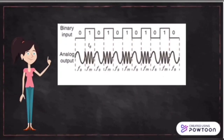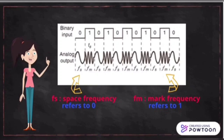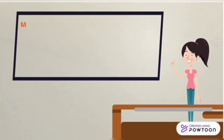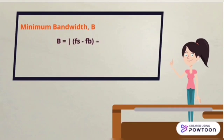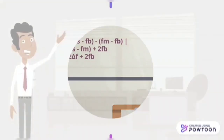In FSK, the binary input will produce analog output. Since there are two different frequencies, one is labeled as Fs and another as Fm. To find the frequency deviation, the difference between Fs and Fm is divided by two. To calculate the minimum bandwidth, the Fs and Fm values must be used with the bit rate. The difference between Fs and Fm is equal to the frequency deviation. By substituting the frequency deviation, we get the final bandwidth formula.